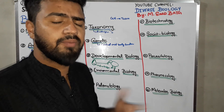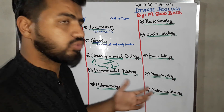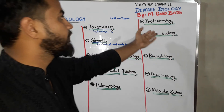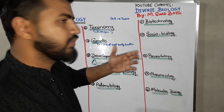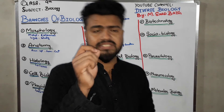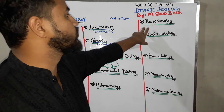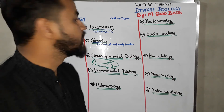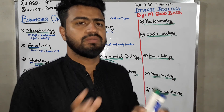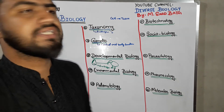If the organism is a plant, we relate it to botany, and if it is an animal, we relate it to zoology. Next branch is biotechnology. 'Bio' means life, 'techno' means technical work, and 'ology' stands for study. So biotechnology is a study that depends on techniques and is based on life. Next is social biology — the study of interaction between two organisms with each other is known as social biology.